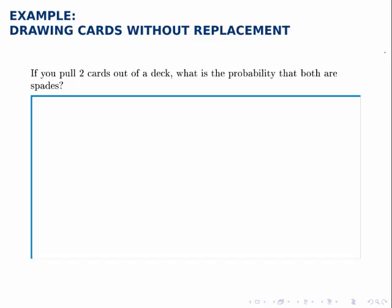If you pull two cards out of the deck, and the implication is without replacement, what is the probability that both are spades?